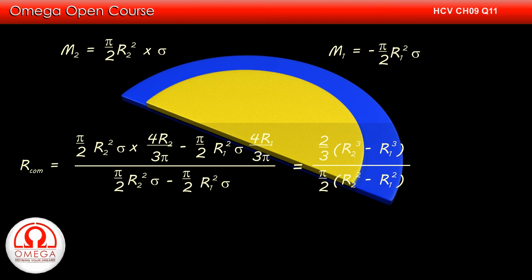Simplifying, we get 2/3 × (R2³ - R1³) / (π/2 × (R2² - R1²)).